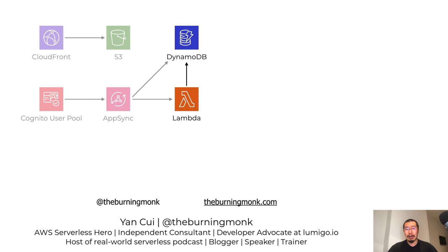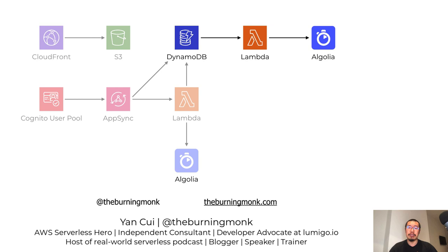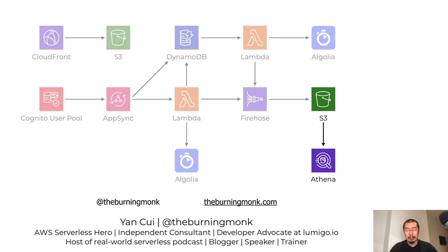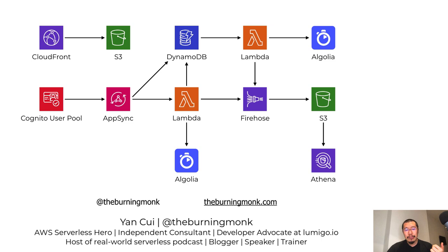We use Algolia for search — it's probably the closest thing you'll find to a serverless Elasticsearch. To get data into the Algolia indices, I use DynamoDB streams to trigger Lambda functions that synchronize data changes to Algolia whenever a user creates or updates their profile or starts a new sporting activity. I also capture business intelligence events from the Lambda functions and use Firehose delivery streams to buffer and batch them into S3, so we can run BI reports against them with Athena.